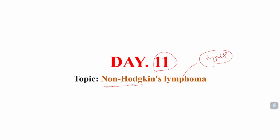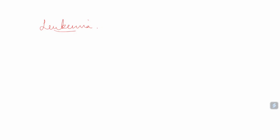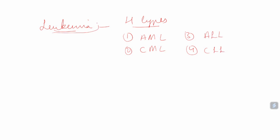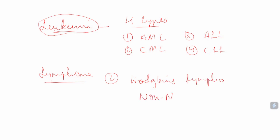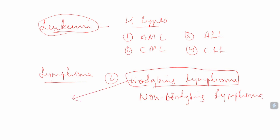In previous classes we have already discussed about leukemias. In leukemia we have four different types: acute myeloid leukemia, chronic myeloid leukemia, acute lymphoid leukemia, and chronic lymphoid leukemia. We have also started lymphomas. In lymphoma we have two types: Hodgkin's lymphoma and non-Hodgkin's lymphoma. In the previous class we already discussed Hodgkin's lymphoma.